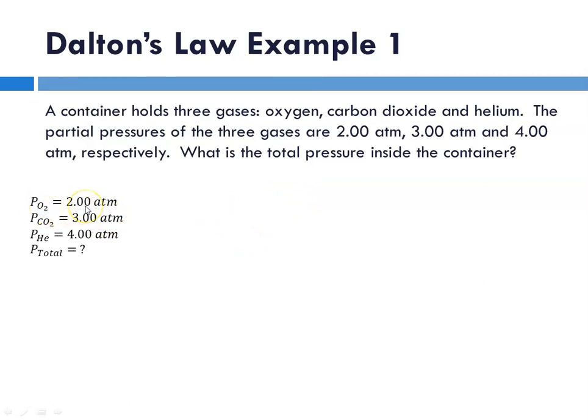Partial pressure of oxygen is 2, partial pressure of carbon dioxide is 3, partial pressure of helium is 4, and p total is what we're being asked to solve for. So p total is going to be the sum of the partial pressures, so partial pressure of oxygen plus carbon dioxide plus helium.